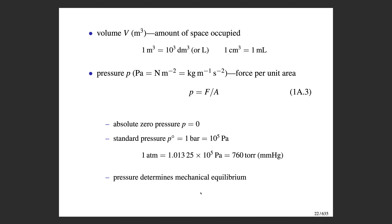One liter is equal to one cubic decimeter, so the cubic decimeter is equivalent to the liter. Also note that one cubic centimeter — one cc — equals one milliliter; they are the same unit.